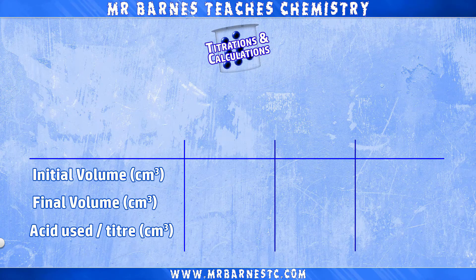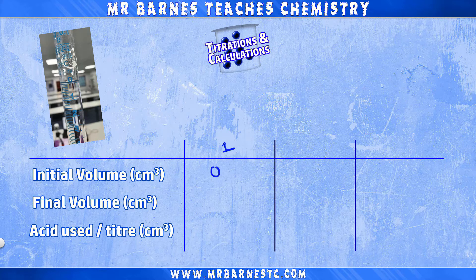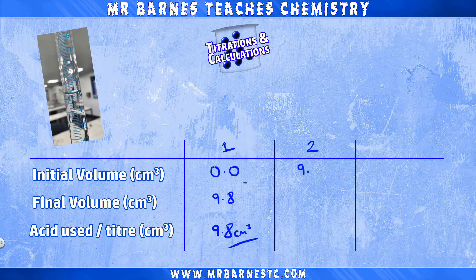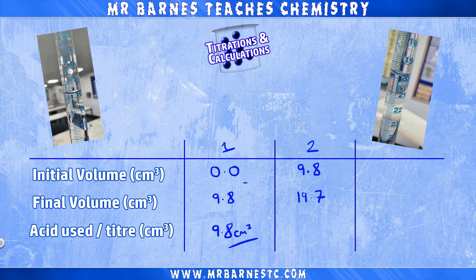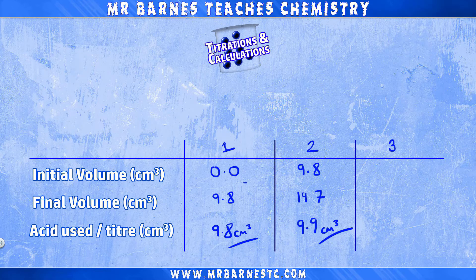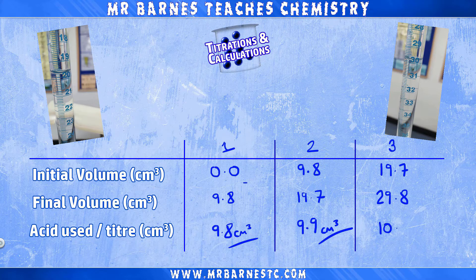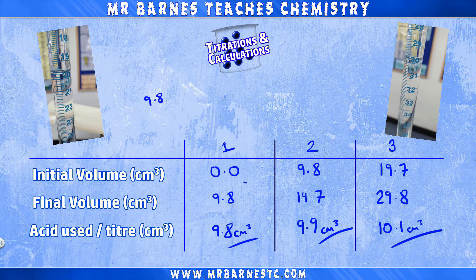Now we've carried out the titration, we need to work out the concentration of our unknown sodium hydroxide. The first thing we need to do is take an average of our results. My first titration had an initial volume of 0.0 cm³ and a final volume of 9.8 cm³, so we used 9.8 cm³ of acid. My second titration started on 9.8 cm³ and finished on 19.7, meaning 9.9 cm³ was used. My third titration started on 19.7 cm³ and ended on 29.8, so 10.1 cm³ was used. These three are concordant — all within 0.1–0.2ml of each other — giving an average of 9.9 cm³, recorded to one decimal place.